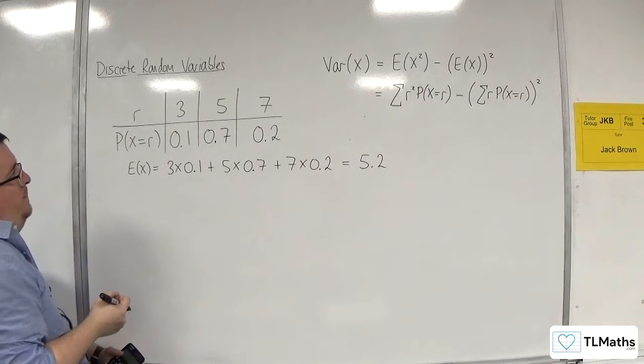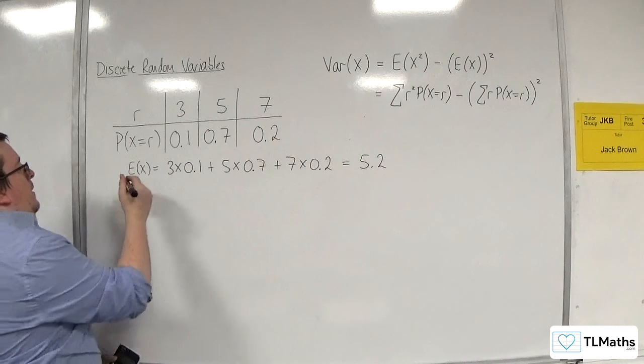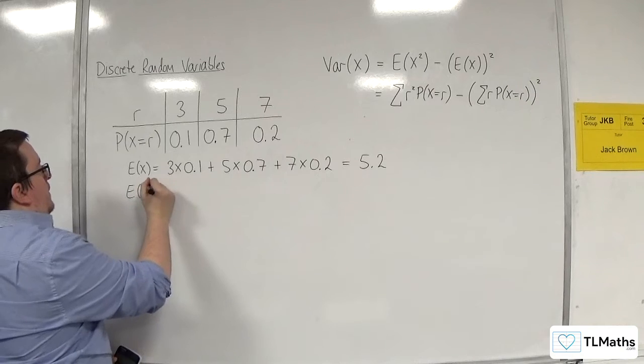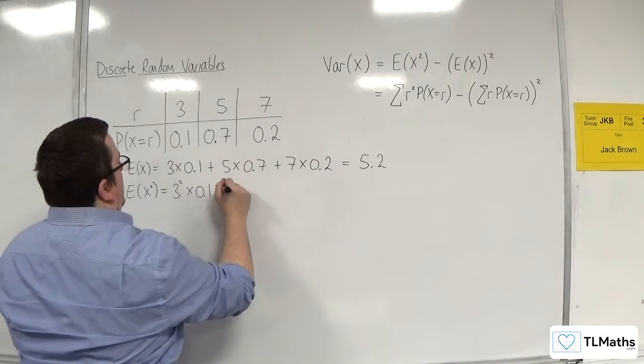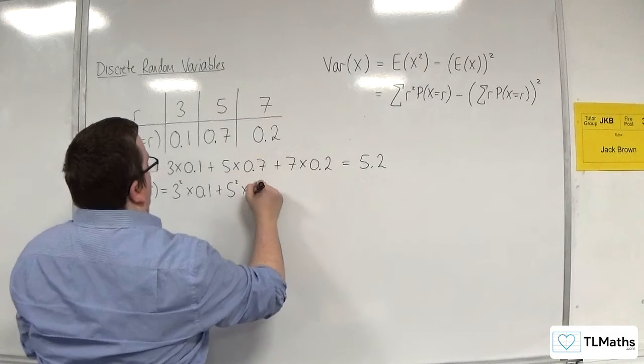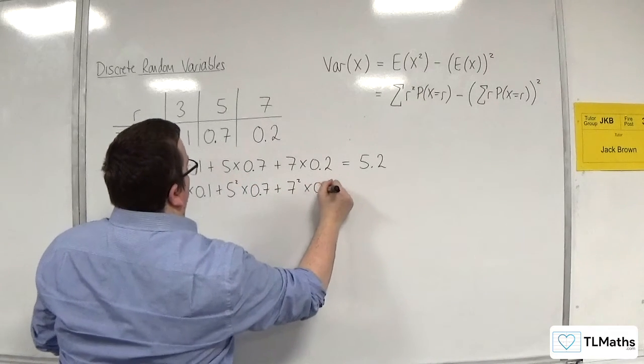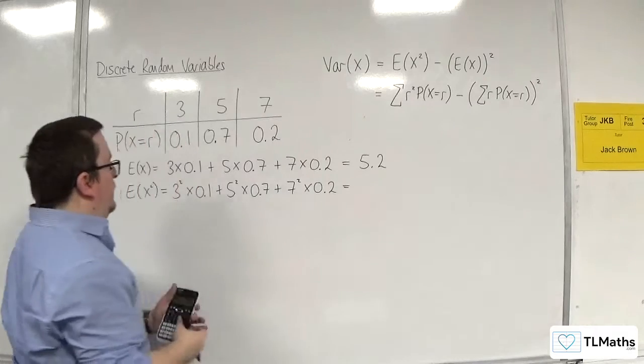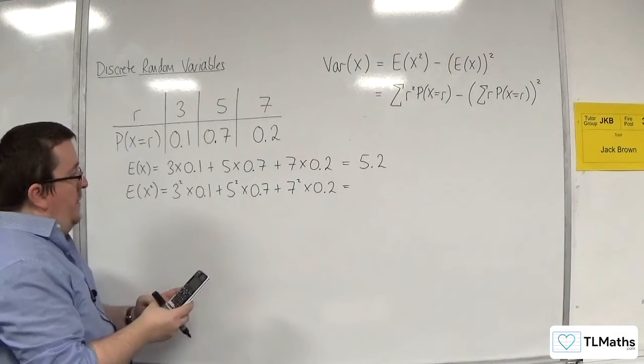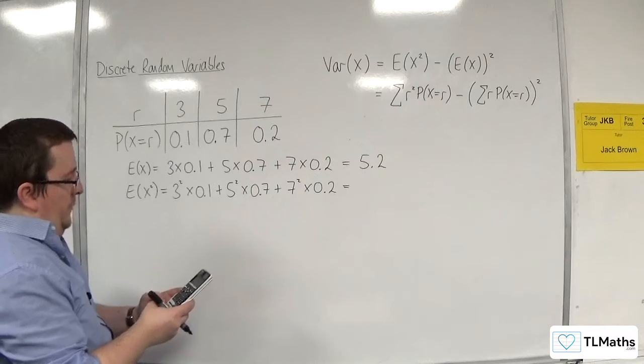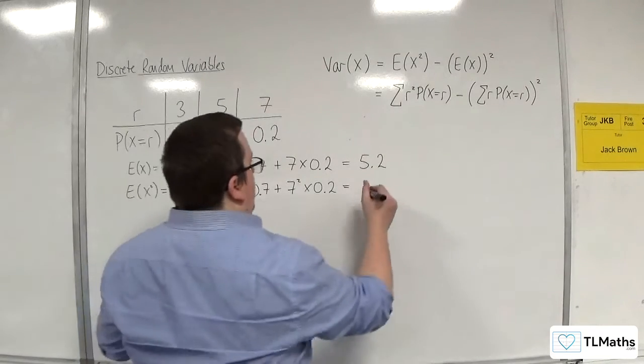OK, so then E(X) squared is 3 squared times 0.1 plus 5 squared times 0.7 plus 7 squared times 0.2. So, 9 lots of 0.1 plus 25 lots of 0.7 plus 49 lots of 0.2, and we get 28.2.